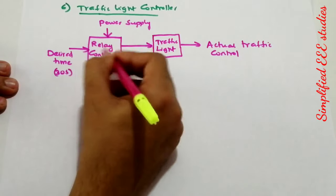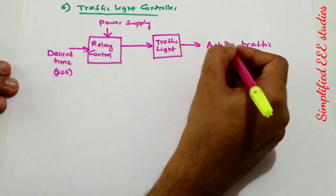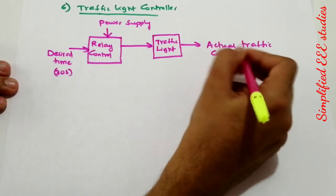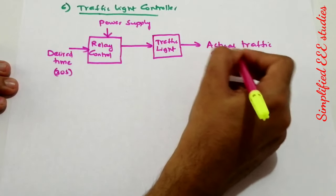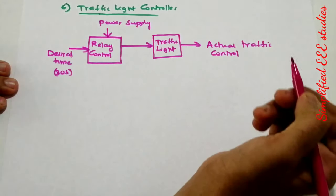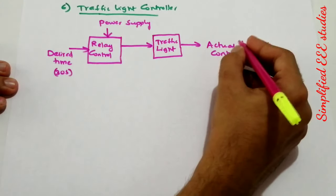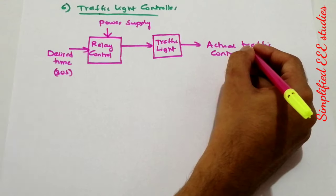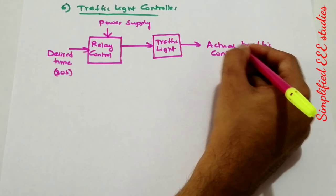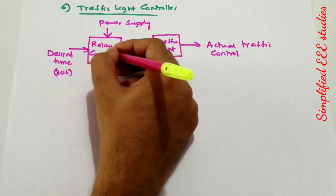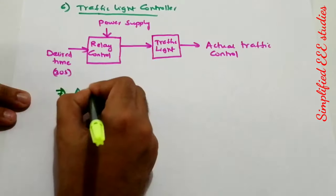The controller does not sense the output — why? Because there is no feedback. Whether the road is busy or not, that is not checked by the controller. That is the exact meaning of an open loop control system.